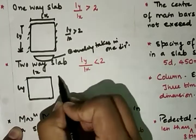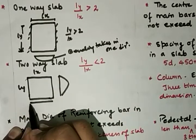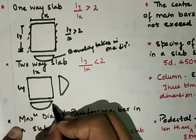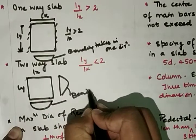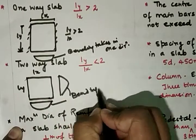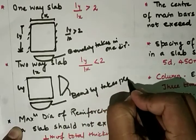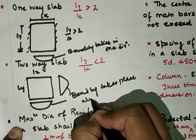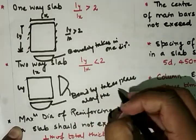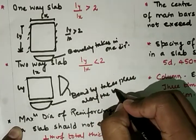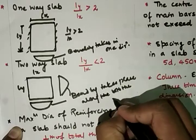In a two-way slab, bending takes place along both Lx and Ly directions — that is, along both sides and in both directions.